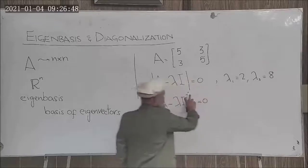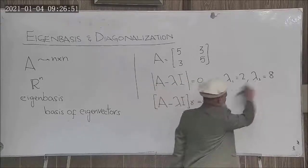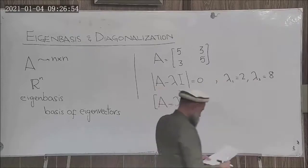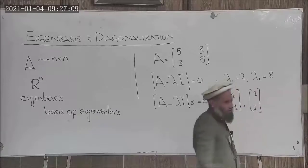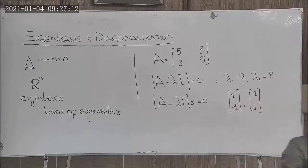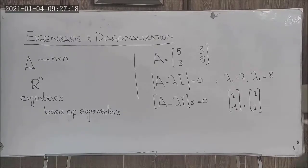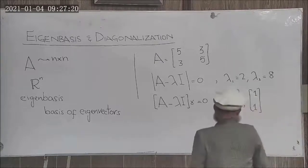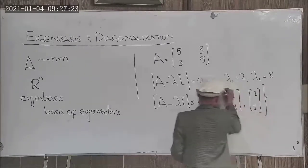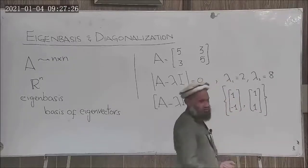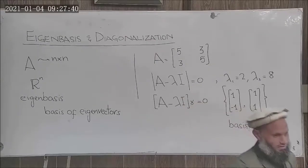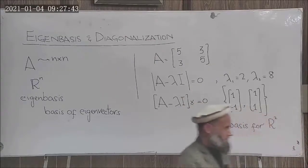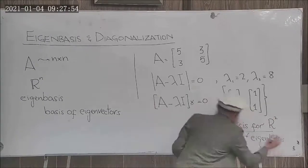Corresponding to one eigenvalue you will have one eigenvector, and corresponding to the second eigenvalue you will have another eigenvector. These two eigenvectors span R^2, therefore this is a basis for R^2, and this basis is called the eigenbasis.